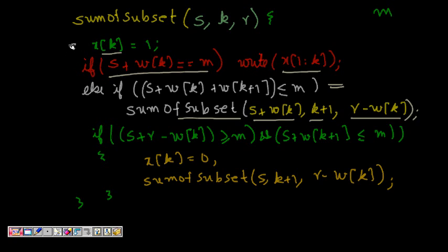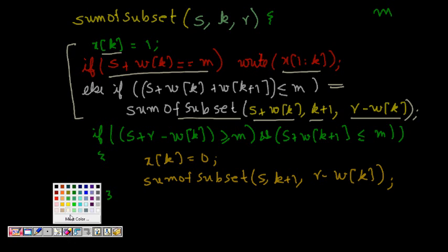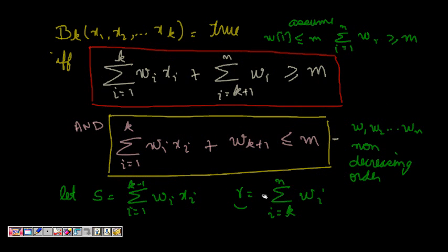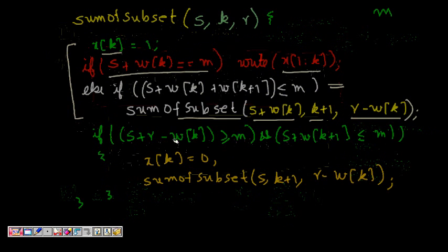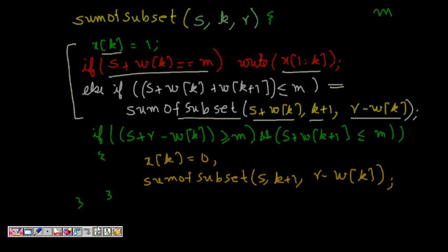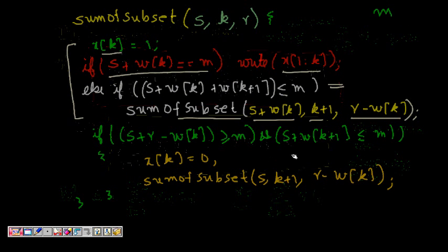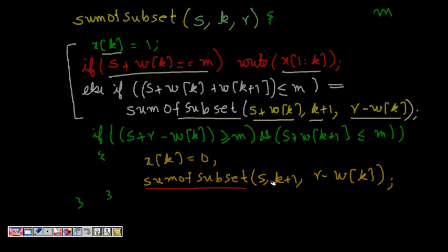For the case xk=0 (not choosing element k): we check two conditions — s + r - wk ≥ m (enough remaining to reach m) and s + w(k+1) ≤ m (next element doesn't immediately exceed m). If both hold, we recurse without taking element k: sum_of_subset(s, k+1, r - wk), keeping the same current sum since xk was not chosen.